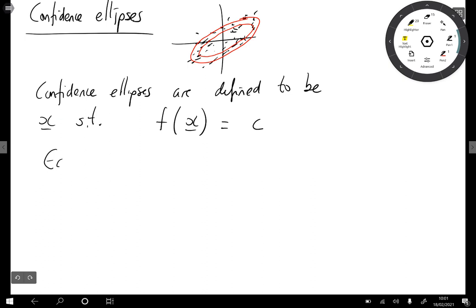So equivalently we have that (x - μ) transpose Σ inverse (x - μ) is some other constant. I'll call it c prime now. So these ellipses or these shapes are defined to be the x's for which this is true.